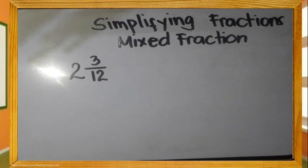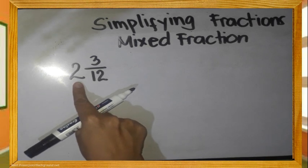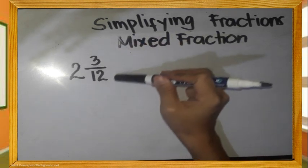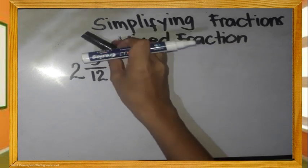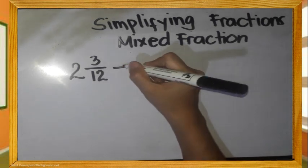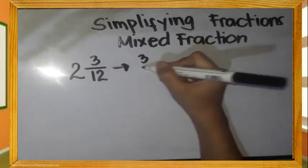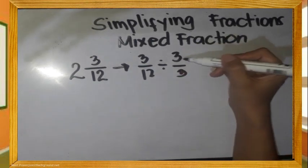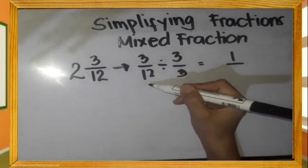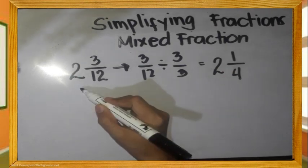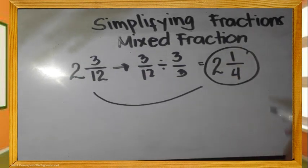Simplifying mixed fraction. Ito ay nagiging mixed fraction kung may kasama na siyang whole number. Paano'y simplify ang 2 and 3/12? Kung titignan natin, ang fraction natin ay naka-improper — ang 3/12. Mag-isip ng numero na pwedeng mag-divide sa 3 at sa 12. Divide natin sa 3. 3 divided by 3 is 1. 12 divided by 3 is 4. Kopyahin lang ang whole number. Kaya si 2 and 3/12 ay 2 and 1/4.